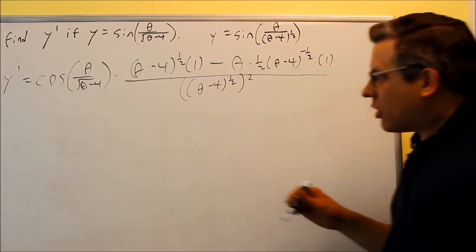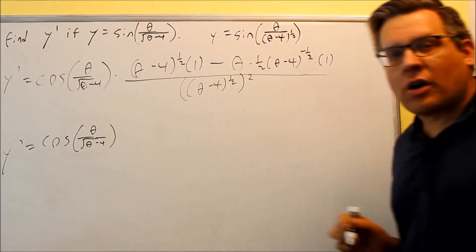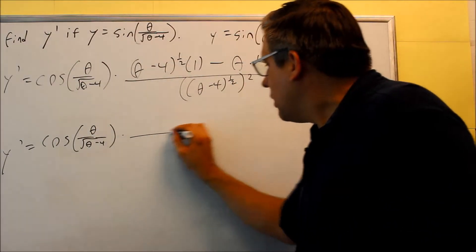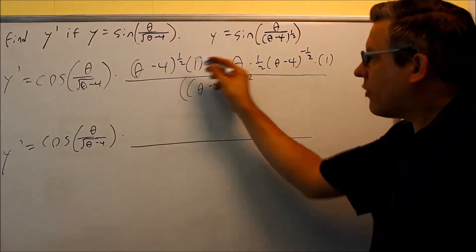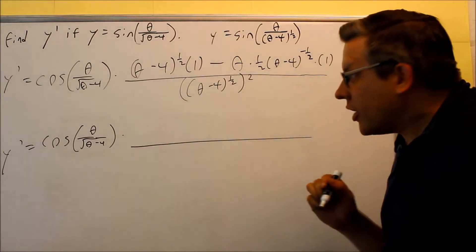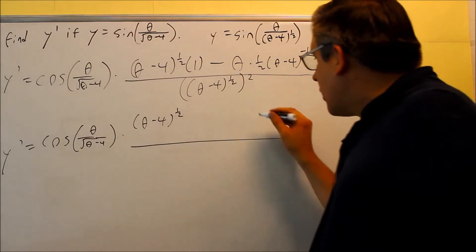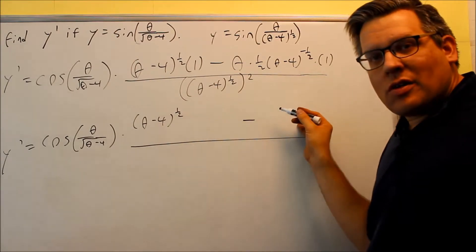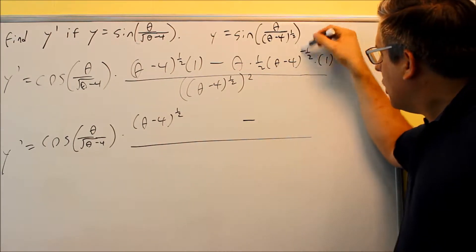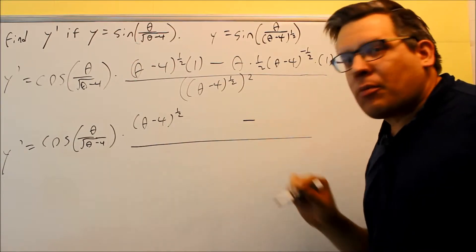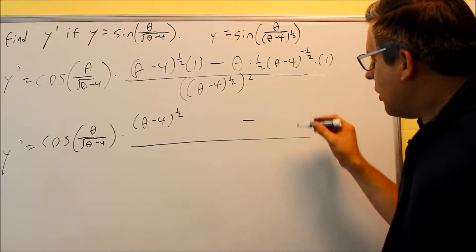Now we have to do a little cleanup work. We start with cosine theta over the square root, same as before. I'm going to keep everything in terms of the one-half power — you'll see why a little bit later. I'm leaving space because I'll have to combine this together as a single fraction. You don't want to leave your answer as complex fractions, so I'll need to combine with common denominators.